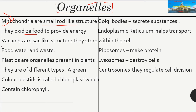Next are plastids, which are organelles present in plants. A green-colored plastid you may have heard of is chloroplast, which contains chlorophyll. Chlorophyll is really important — it enables a process known as photosynthesis through which plants make food. In addition, there are Golgi bodies, which secrete substances like enzymes, and endoplasmic reticulum, which helps in the transport of substances within the cell.